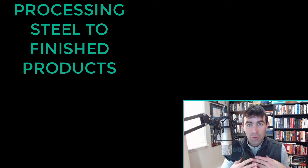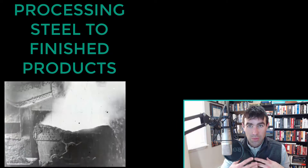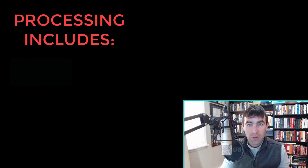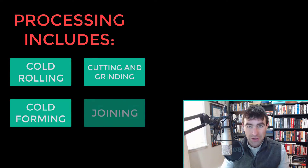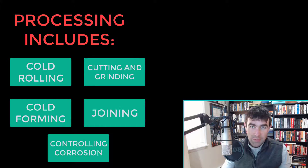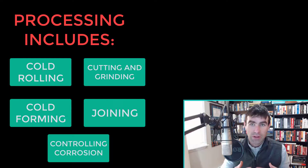Let's talk about chapter nine: processing finished products of steel. Some of the processes we use for cold working steel into what we call finished products are rolling, forming, cutting, and grinding — which is just machining — joining, which includes welding, brazing, and soldering processes, and corrosion prevention, which covers coatings like galvanized coatings, zinc, black oxide, and paint.